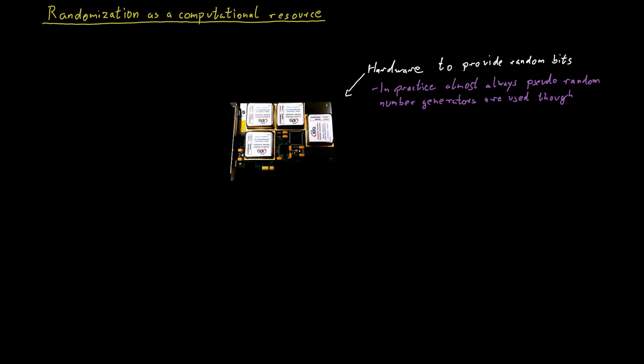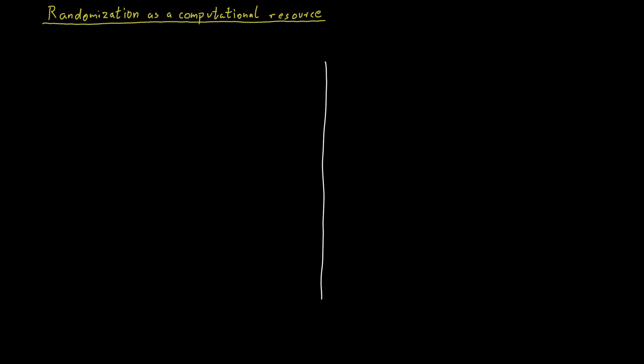There are two different ways in which we can think about randomness in our computational model. So one way of thinking about this is to define a different type of Turing machine. So before we had deterministic Turing machines but we also can define something called a probabilistic Turing machine. And a probabilistic Turing machine is just the same as a deterministic Turing machine. The only difference is that it can generate random bits.